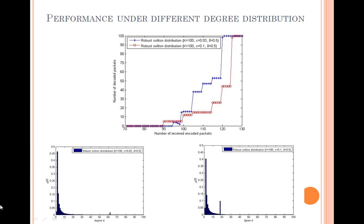Next, the impact of different degree distributions on the performance of LT code is investigated. The two different Robust Soliton degree distributions used in the LT decoding process are shown in the bottom two figures. For Robust Soliton distribution with parameters k equals 100, c equals 0.03, and delta equals 0.5, the number of received encoded packets required to fully recover the original file is 120. For Robust Soliton distribution with parameters k equals 100, c equals 0.1, and delta equals 0.5, this number is 125.